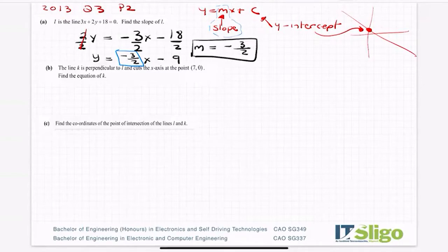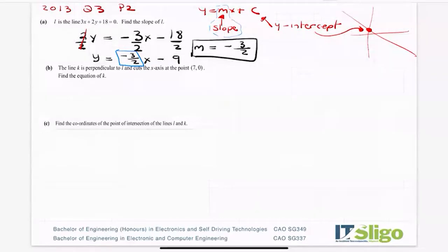And that is how you find the slope of a line when you are given the equation rather than the points - using y equals mx plus c. So part b then: the line k is perpendicular to l and cuts the x-axis at the point (7, 0). Find the equation of k.